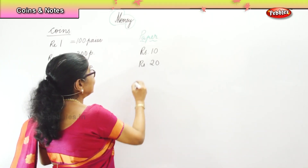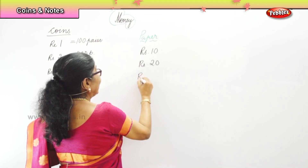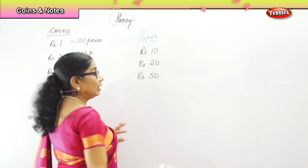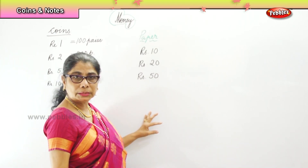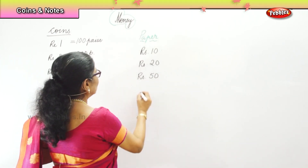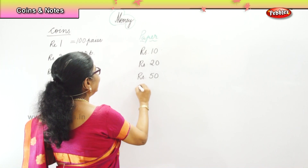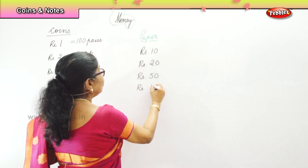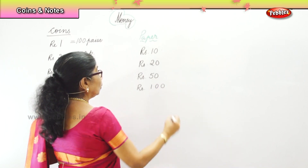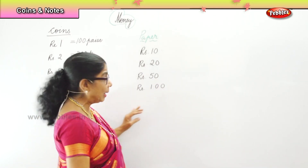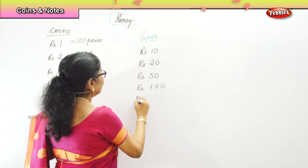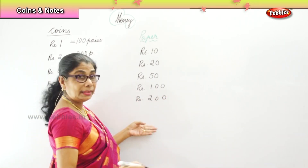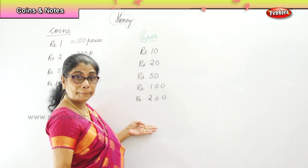Then we have twenty rupees paper money. Then now we have rupees fifty — a lovely blue color paper note. Then we have rupees hundred — one hundred paper money. Then we have rupees two hundred in paper money.